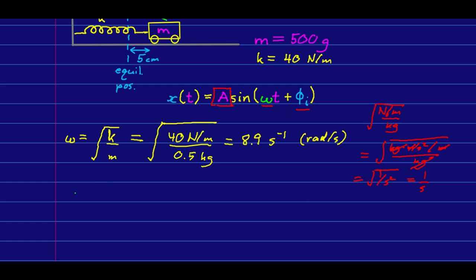We don't actually need the period, but it's nice to get it because it's easier to think about than angular frequency. The period is just two pi over omega. If you plug that into your calculator, you'll see that the period is about 0.7 seconds, which seems like a reasonable period.